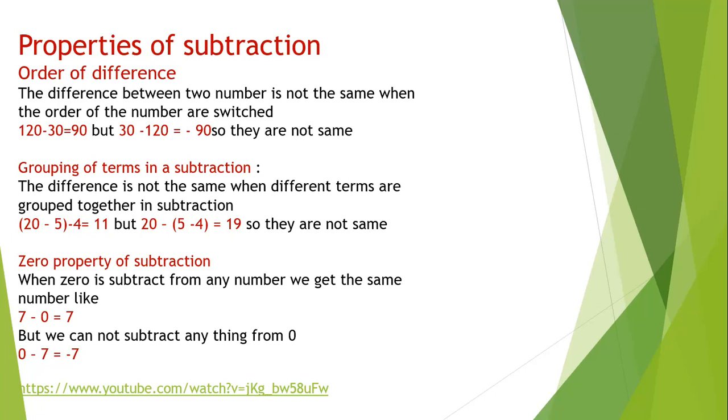First, order of differences. The difference between two numbers is not the same when the order of the numbers are switched. In addition, when we switch the numbers, we get the same answer, but in subtraction, we will not get the same answer. Like 5 plus 2 equals 7, and 2 plus 5 equals 7. But if we subtract, 5 minus 2 equals 3, and 2 minus 5 equals minus 3. The answers are different.